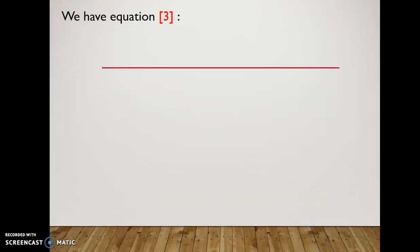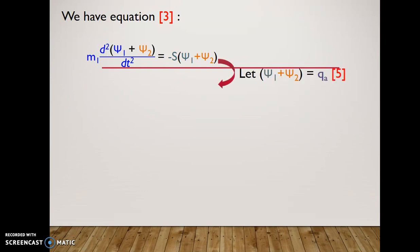From equation 3 and 4, we can see phi 1 minus phi 2 and phi 1 plus phi 2 are modeling simple harmonic motion, so we can replace them with qA and qB to make our equations simpler, giving us these equations.